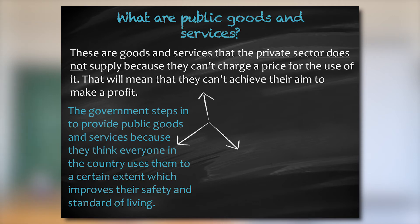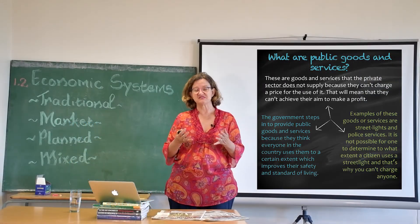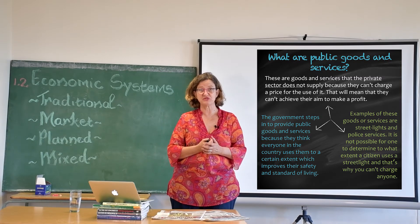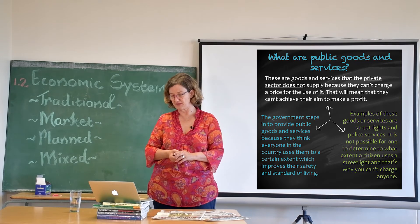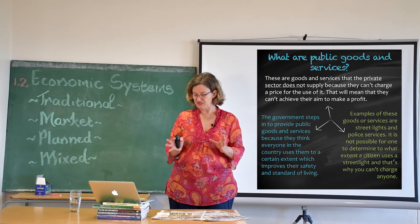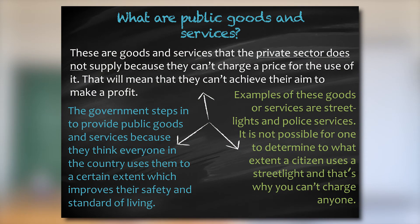The government steps in and supplies public goods and services because they know we need them. They improve the welfare of citizens — it is good for us to feel secure and safe walking in the streets. That is why the government supplies these products, which we call public goods and services. So remember, one disadvantage of a market economy is that it does not supply merit goods and public goods — and now you understand why. In a planned economy, these are efficiently supplied by the government.